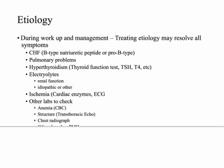The management of AFib requires looking into possible causes. Common first labs and tests are associated with common causes of AFib. For congestive heart failure, check B-type natriuretic peptide or pro-BNP, and look for pulmonary problems through auscultation, checking diaphragmatic excursion, and looking for pneumonia or atelectasis on X-ray. Another common cause is hyperthyroidism, so check thyroid function tests — TSH, T4. Also check electrolytes for renal function and idiopathic electrolyte abnormalities.